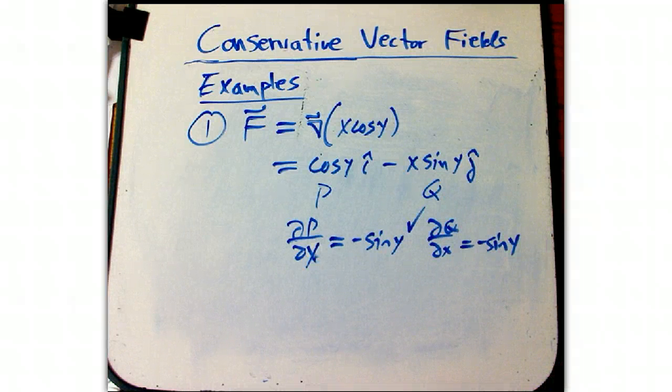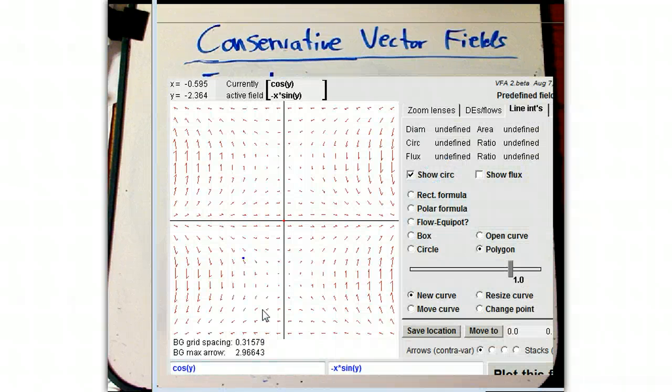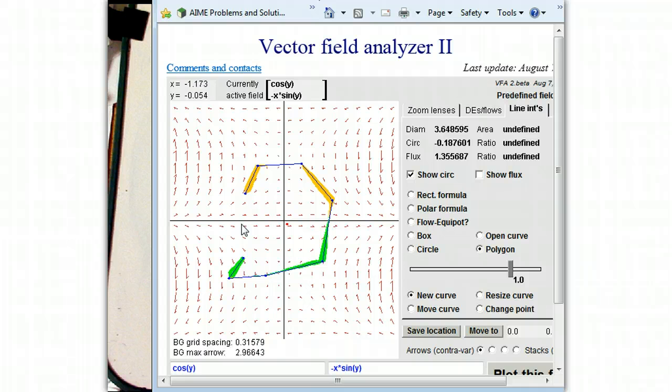I graphed this on the vector field analyzer 2. There's cosine y minus x sine y. Let's go ahead and calculate. Here's a closed curve. And notice the circulation, that's the integral along the curve. And it applies to a closed curve, the term circulation, is zero.